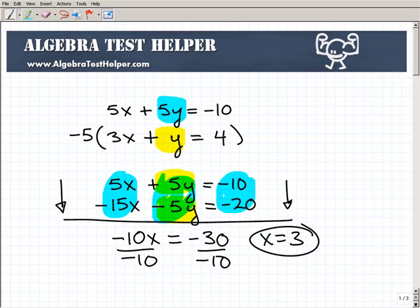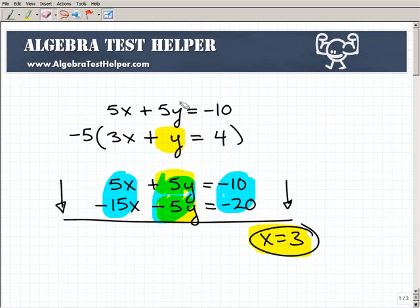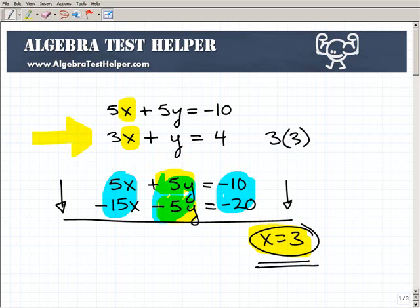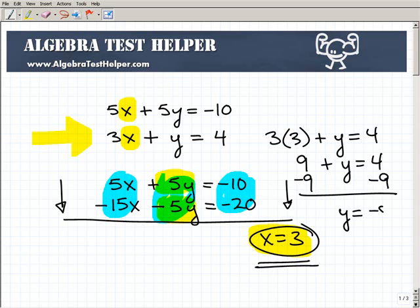So all I need now to solve this system is to figure out what y is. Let me erase this. I have x now. So I have what x is equal to. So to figure out what y is going to be, you could take that x value, x equals 3, and plug it in to any of your original equations. So x is equal to 3. So I could plug it in right here or plug it in right there, that 3, and solve for y. So I'm going to go ahead and do that on this equation. So it's 3x. But now, remember, x is equal to 3. So I'm going to plug in 3 right there plus y equals 4. And I get 9 plus y equals 4. Now I'm going to subtract 9 from both sides of the equation. I'm going to get y is equal to negative 5. And I'm done.